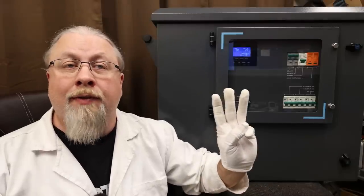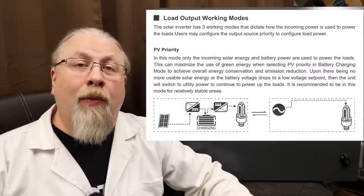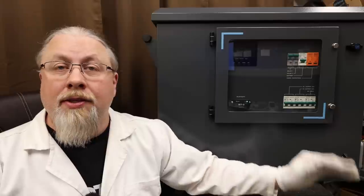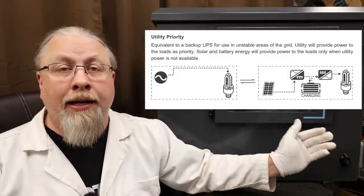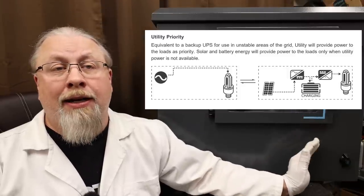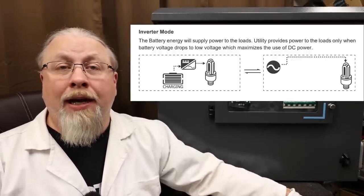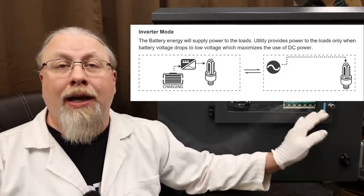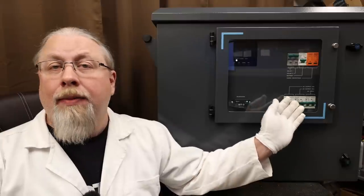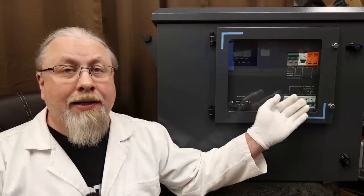The inverter does offer three modes of operation. One is called PV priority, which will use solar plus battery to power the loads. Once the battery drops low enough, then AC power will pass through. Utility priority mode acts like a standard UPS. It will use AC to power the loads at all times unless the AC power gets shut off. Then there's raw inverter mode and that will power the inverter only with the battery until the battery drops to such a low level that AC power will then pass through. That latter mode would be useful for charging up the battery during the day with solar and then using the battery at night to power the loads, basically to save you on electricity.